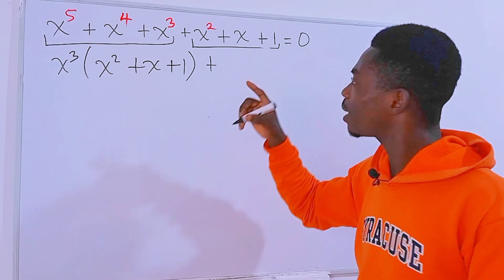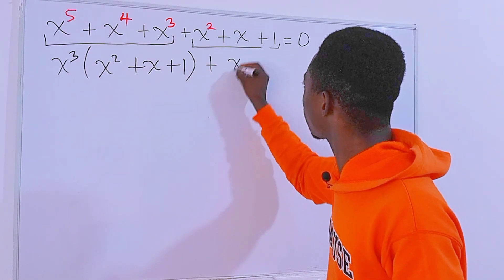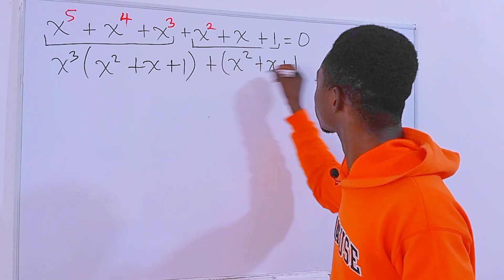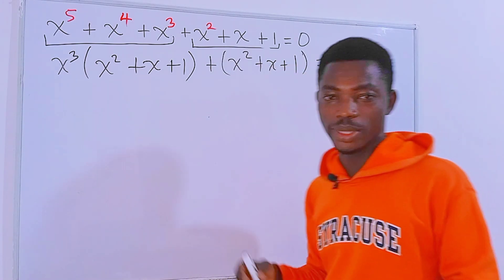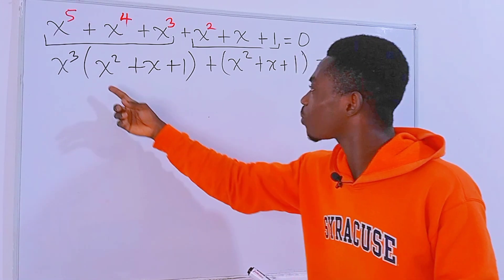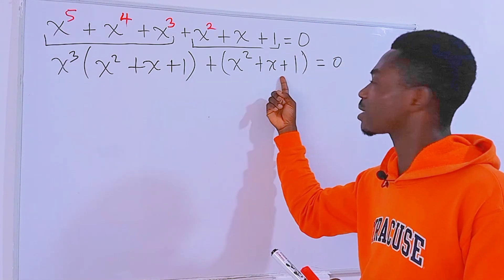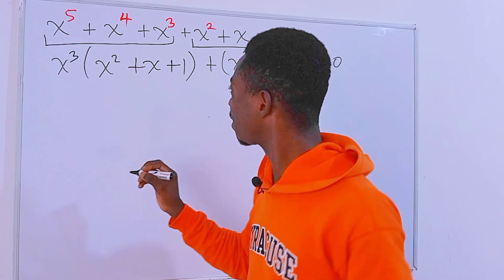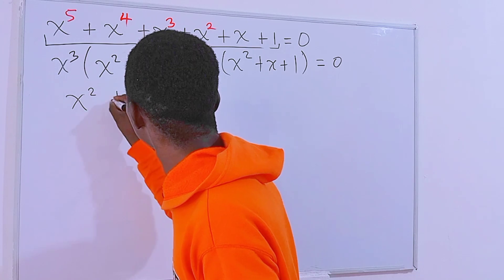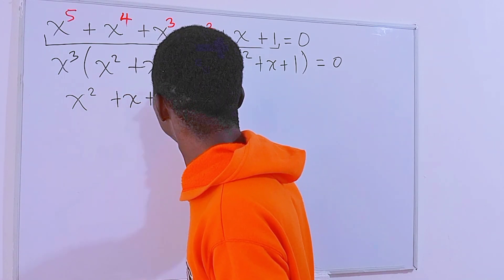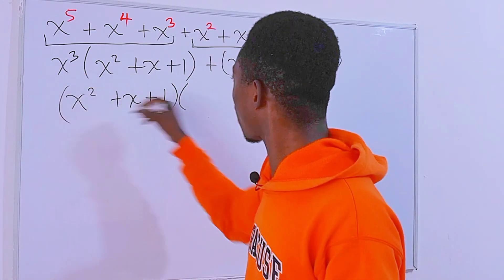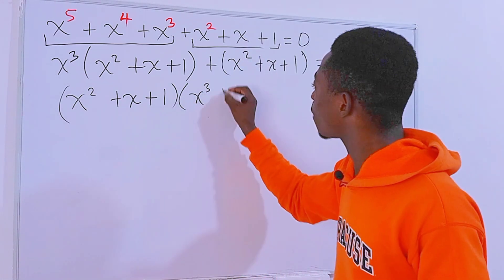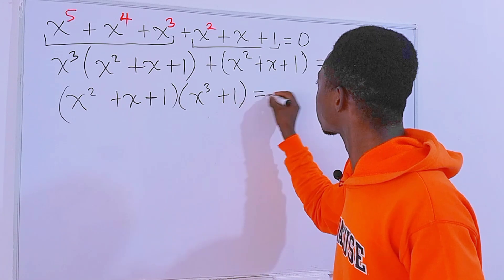From the second group, nothing can be factored except 1. Therefore, we can write the exact same thing: x to the 2nd power plus x plus 1. So the full expression becomes x to the 3rd power times (x² + x + 1) plus 1 times (x² + x + 1), and this equals 0. We can clearly see that what is in one group is the exact same as the other, so we can factor that out.